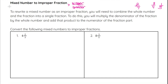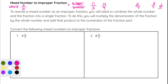A mixed number is where we have a whole number combined with a fraction — for example, 4 and 2 thirds. An example of an improper fraction would be something like 11 thirds or 14 ninths, where the top number is larger than the bottom number. To rewrite a mixed number as an improper fraction, we will need to combine the whole number and the fraction into a single fraction.